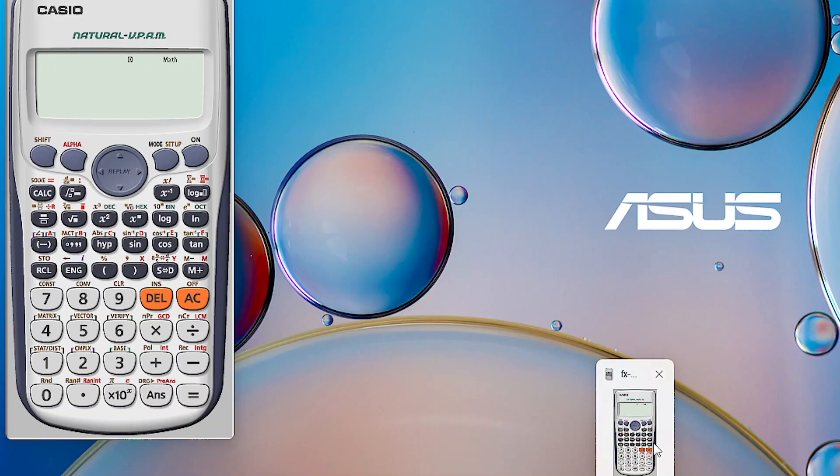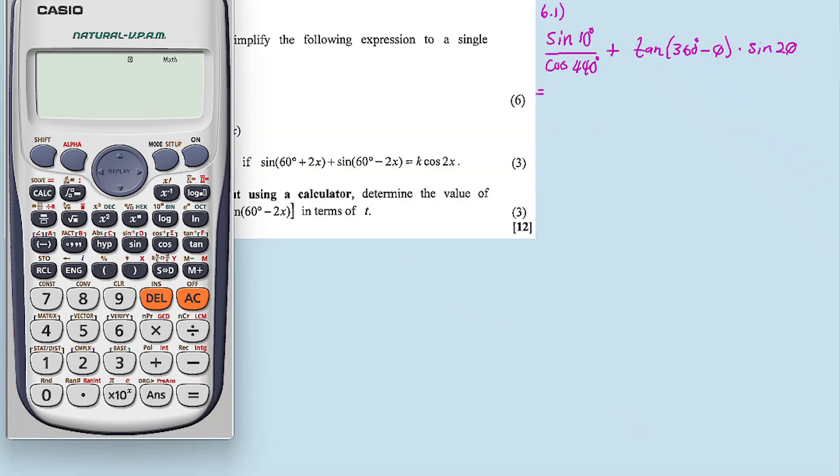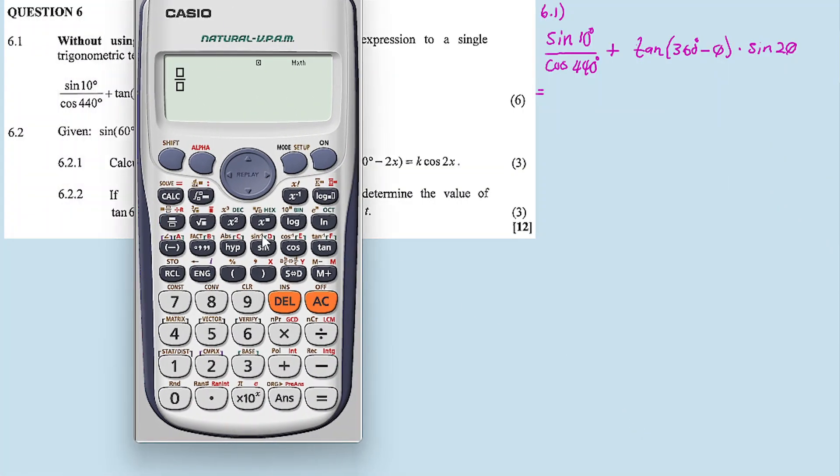It's equal to sine 10 over cos 440 degrees plus tan of 360 minus theta. This is a reduction formula from the fourth quadrant, and then sine 2 theta, which is a double angle.